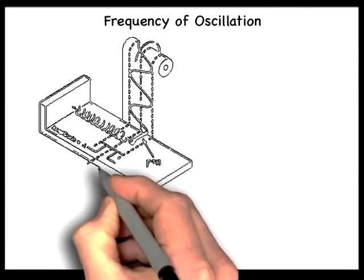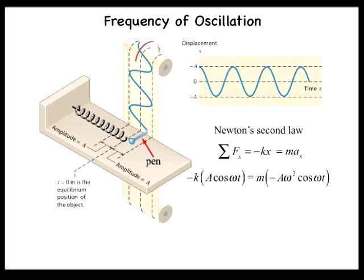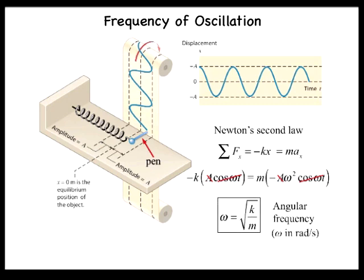We would now like to find an equation for the frequency of the oscillations for a horizontal spring. The sum of the forces acting on the object of mass m is equal to negative kx. According to Newton's second law, this must be equal to the mass times the acceleration in the x direction. We substitute the expressions for position and acceleration into the equation negative kx equals max to get negative k times a cosine omega t equals m times negative a omega squared cosine omega t. Cancelling the cosines, amplitudes, and negative signs on both sides, and solving for omega, we get omega equals the square root of k divided by m. This is the angular frequency, measured in radians per second.